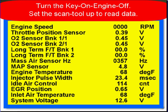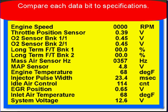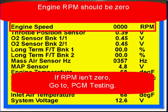Turn the key on with the engine off. Set the scan tool up to read engine data. Compare each data bit to specifications. Engine RPM should be zero. If it isn't, test the PCM.